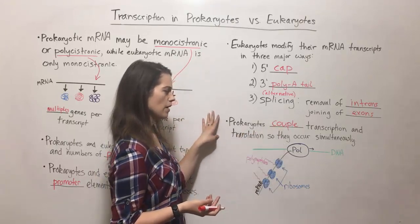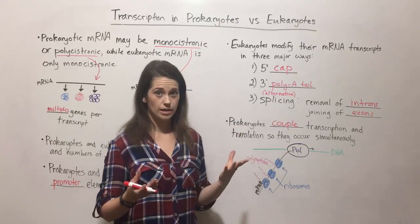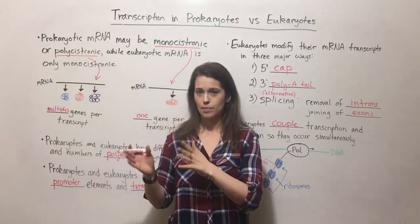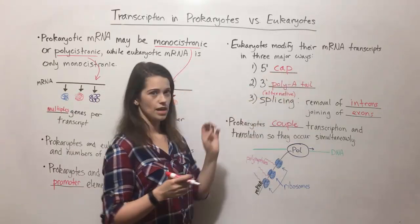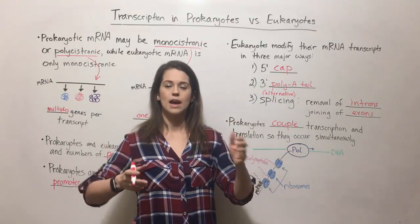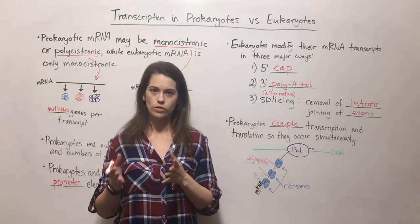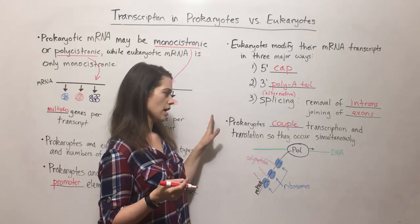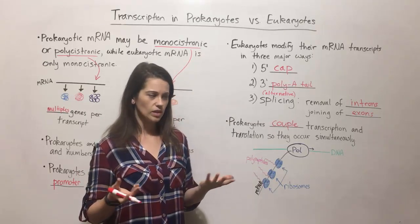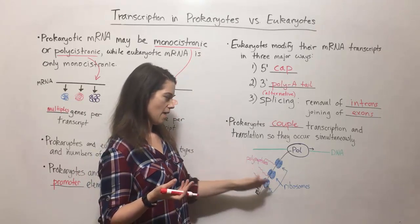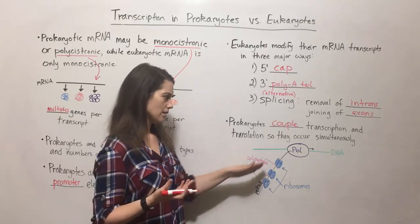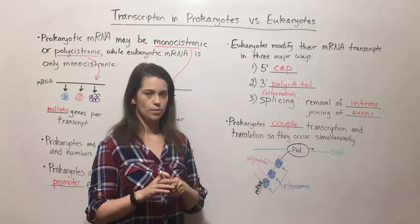Prokaryotes can do coupling because they don't have a nucleus. With eukaryotes, transcription happens in the nucleus, the modifications happen, and then the mature mRNA goes out into the cytoplasm where translation begins. Prokaryotes don't have a nuclear membrane, so the DNA and ribosomes can be near each other, allowing these two processes to be coupled together.